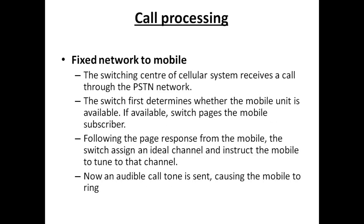Next is call processing. Here we are discussing how we can make a call on a mobile phone. There are mainly three kinds of call processing methods: fixed to mobile (fixed network to mobile), mobile to fixed network (mobile to LAN phone), and mobile to mobile. In fixed network to mobile call processing, the switching center of a cellular system receives a call through the PSTN — Public Switched Telephone Network.